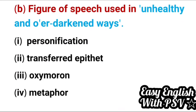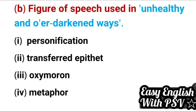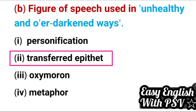Similarly, the figure of speech used in 'unhealthy and over-darkened ways' is also transferred epithet — same concept applies. So in this lesson, there are two examples of transferred epithet to remember: one is 'gloomy days' and the other is 'unhealthy and over-darkened ways'.